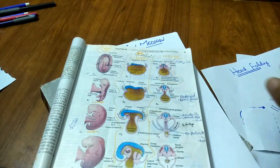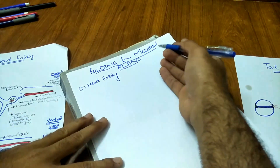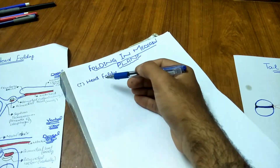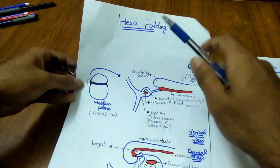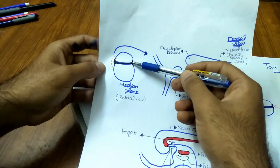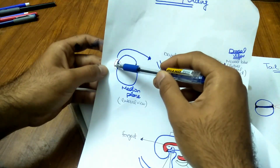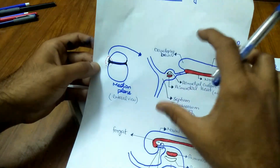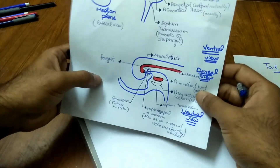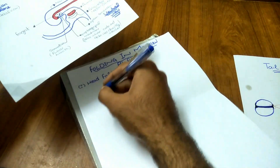Now going on to head folding. In the median plane folding there are further subdivisions: head folding and tail folding. In the median plane embryo, this cross-section is shown like this — this is the head portion of the embryo, the magnified view of the head portion. This is before folding and this is after folding.